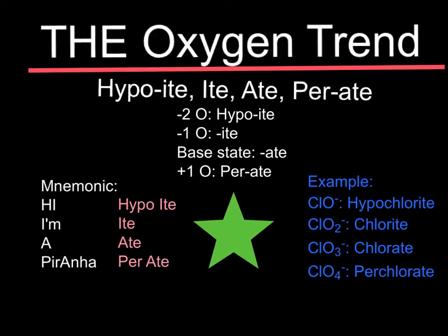An example is with chlorine. Not all elements can make ions with one, two, three, and four oxygens, but chlorine can. So you have hypochlorite, chlorite, chlorate, and perchlorate. You can even use 'Knob Cob Soy Poi' to identify the -ate, and then use 'HI I'm a piranha' to find out what the ion would be if there were a different number of oxygens.